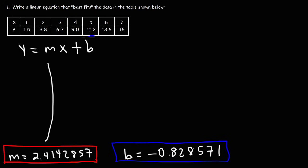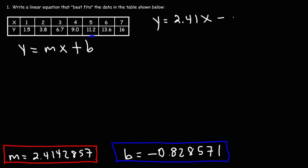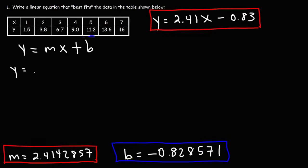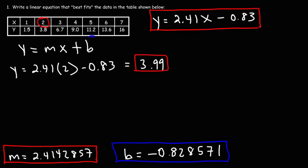To write the linear equation, we plug in our m and b values into slope-intercept form: y = 2.41x − 0.83. Let's check it. Plugging in x = 2: 2.41×2 − 0.83 = 3.99, which is not too far from the actual value of 3.8. That's a good approximation.